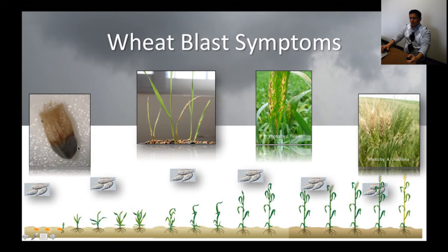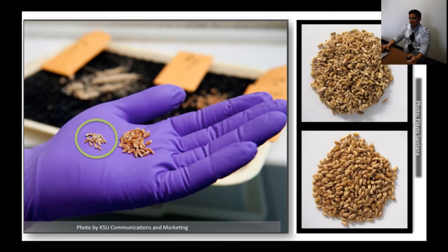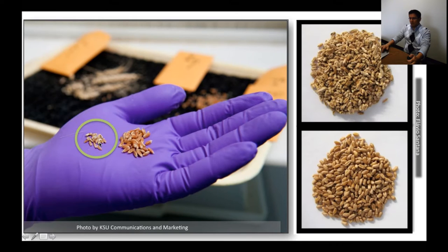Let's look at the type of symptoms found on affected seeds. On a highly susceptible cultivar that has been affected by the disease, at the end of the season you can expect to see severely shriveled grains compared to healthy grain. A picture shared by Flavio Santana from EMBRAPA Brazil shows grains coming from highly affected heads versus those coming from non-affected heads — the difference is very clear.